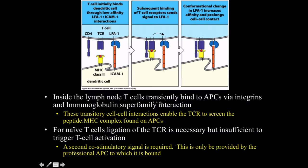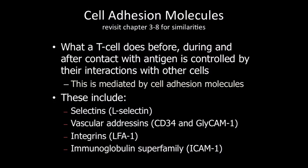Inside the lymph node, the T-cells transiently bind to the antigen-presenting cells via the integrins and the immunoglobulin superfamily interaction, which we're about to talk about in the next chapter. This interaction with the dendritic cells is facilitated strictly via the interactions with integrins and cell adhesion molecules. For naive T-cells, ligation of the T-cell receptor is necessary, but it's insufficient to trigger T-cell activation — we'll talk about why it's insufficient later on.